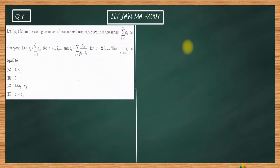Hello dear students, welcome to Axiomaticos. This video is part of the solution series for IIT JAM 2007. We are here with problem number 7, which is from analysis. Let us firstly have a look at this problem and then we will solve it. Let aₙ be an increasing sequence of positive real numbers such that the summation of aₖ from k=1 to infinity is divergent.